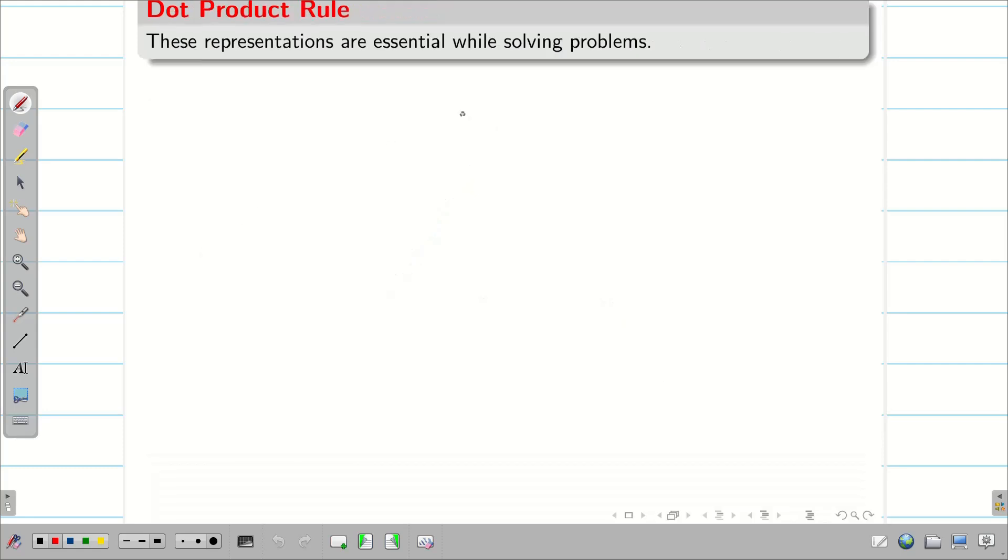Now, we are going to see a very essential result which we use in problems. If we consider the unit vector i dot i, the angle between these two is 0. When you substitute cos 0, cos 0 is going to be 1. Therefore, i vector dot i vector is mod i vector into mod i vector cos 0, which is 1. Therefore, we can see i dot i, j dot j, k dot k is always 1.